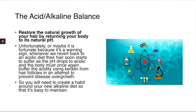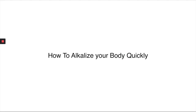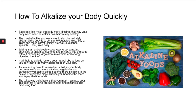You will need to create a habit around your new alkaline diet so that it's easy to maintain. To alkalize your body quickly, eat foods that make the body more alkaline so your body won't need to consume its own hair to stay healthy. The most effective and easy way is to start juicing — buying a juicer and making a carrot, celery, broccoli, cucumber, and spinach juice. It's a great way to get good quantities of enzymes, nutrients, and minerals into the body without expending large amounts of time digesting fiber. It will help restore your natural pH as long as you don't have too many acidic foods. As your body becomes more alkaline, vegetables and vegetable juices become more pleasing to the palate. Maximize your intake of net alkaline-producing food and minimize acid-producing food.